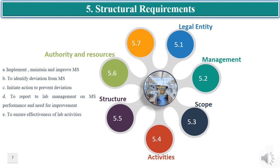As per Clause 5.6, laboratory personnel shall have authorities and appropriate resources: 1. To implement, maintain, and improve the laboratory management system. 2. To identify deviations from management system requirements or from defined procedures while performing laboratory activities, and to initiate action to prevent or minimize these deviations. 3. To report to laboratory management on the performance of the laboratory management system and provide opportunities for improvements. 4. To ensure the effectiveness of laboratory activities.